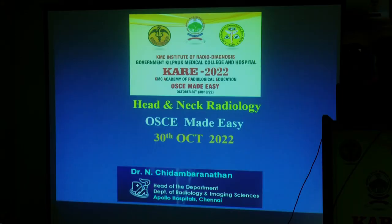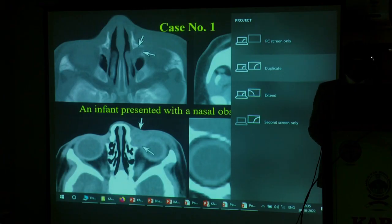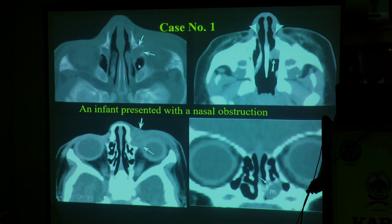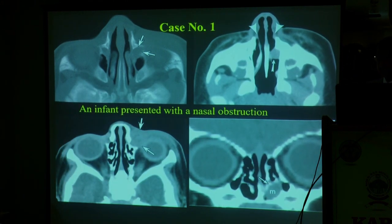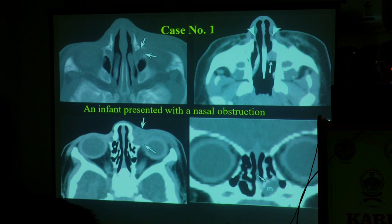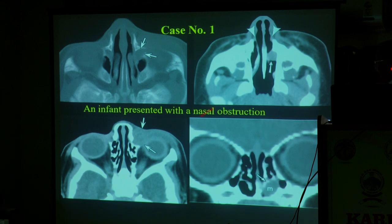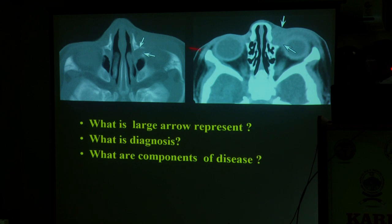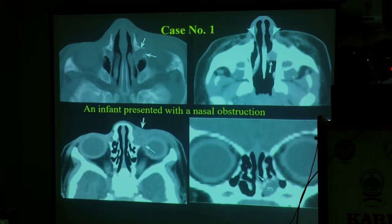I will show some examples quickly and we will proceed case by case. Case one: an infant presenting with nasal obstruction, a small child. There is something I have marked specifically. You can see various areas. You have to identify the abnormality. The question will be: what is the large arrow pointing out? You cannot make a diagnosis with one arrow alone — you have to see the constellation of findings.